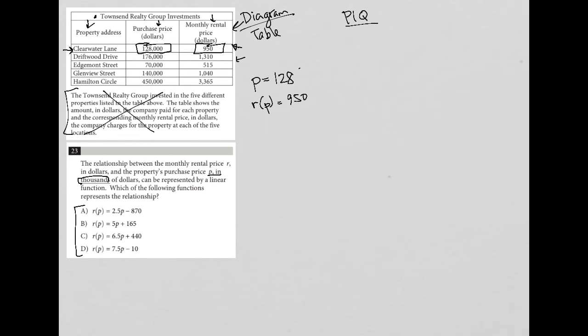So now let's just use this data and try each answer choice. So choice A would say that nine fifty is equal to two point five times one hundred and twenty eight minus eight hundred and seventy. Now we can take a look at this and pretty much see that this number here by no means will be larger than eight seventy. So it's going to be smaller than eight seventy. So there's just no chance that this is equal, because I'll have a negative value here. So I'm not going to even waste my time putting that in my calculator.